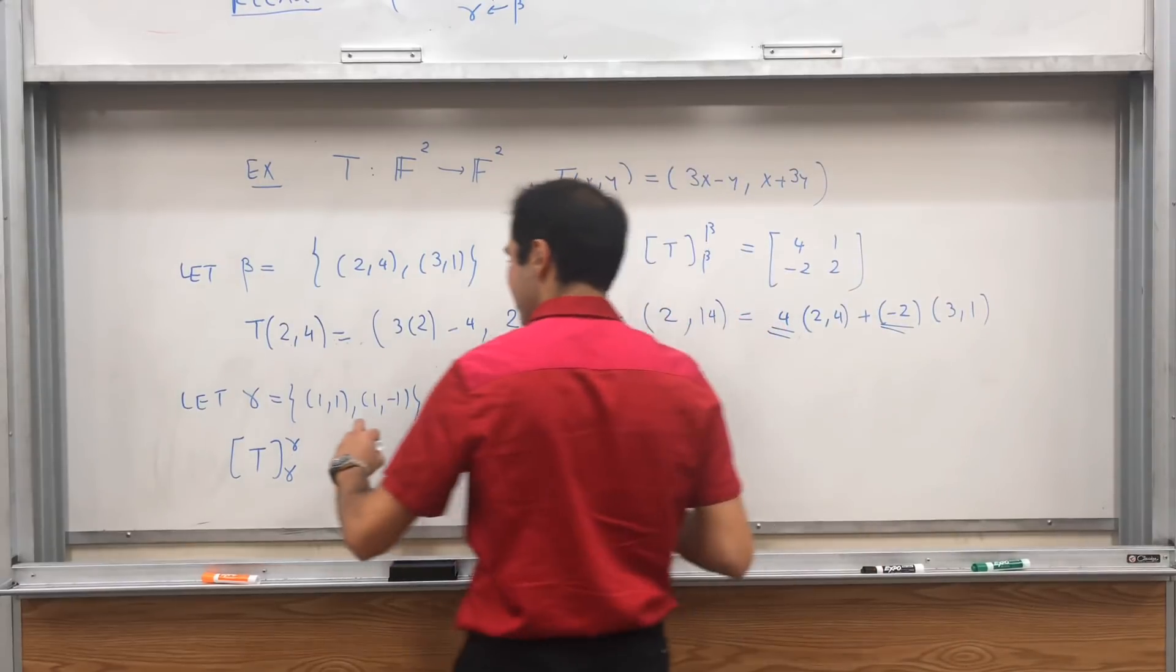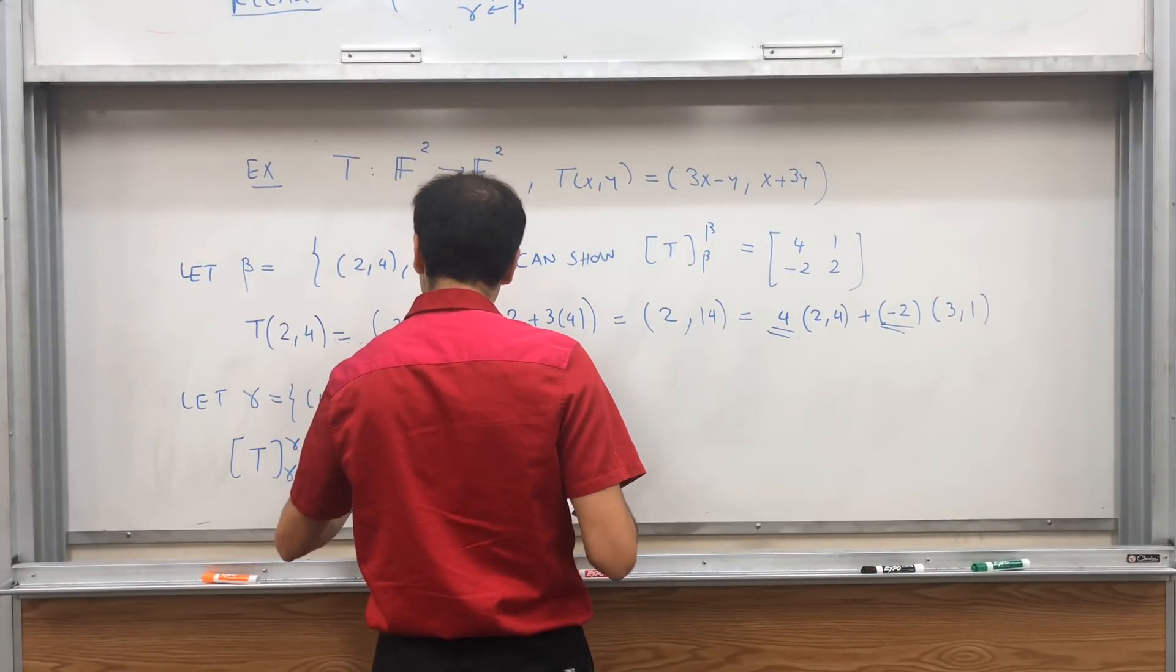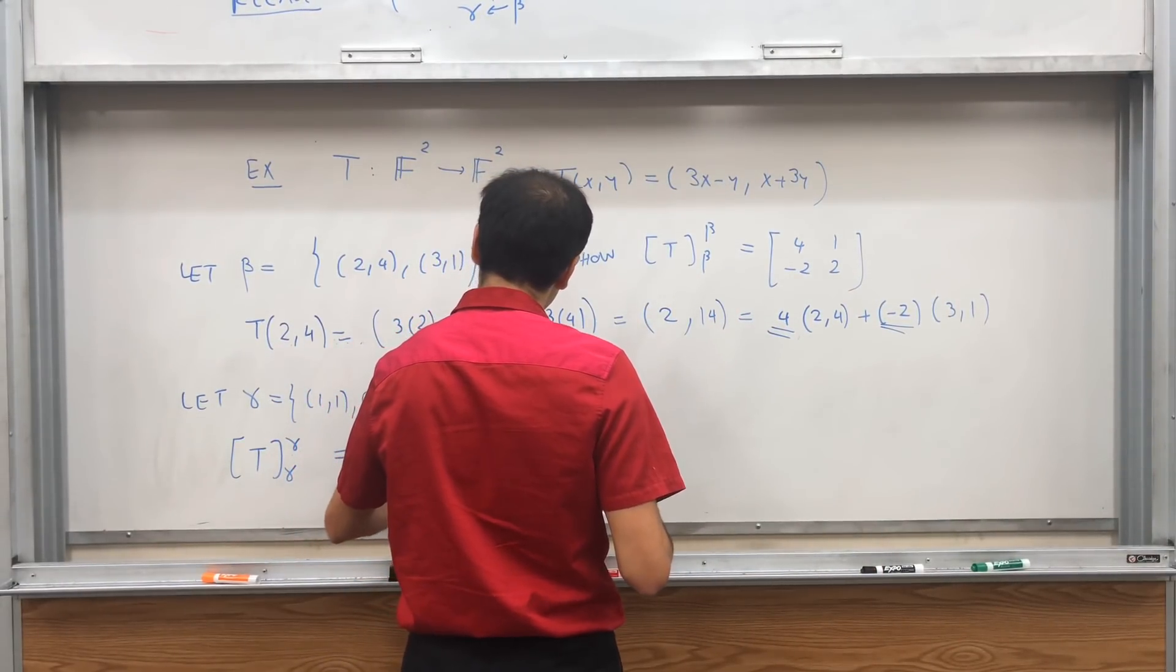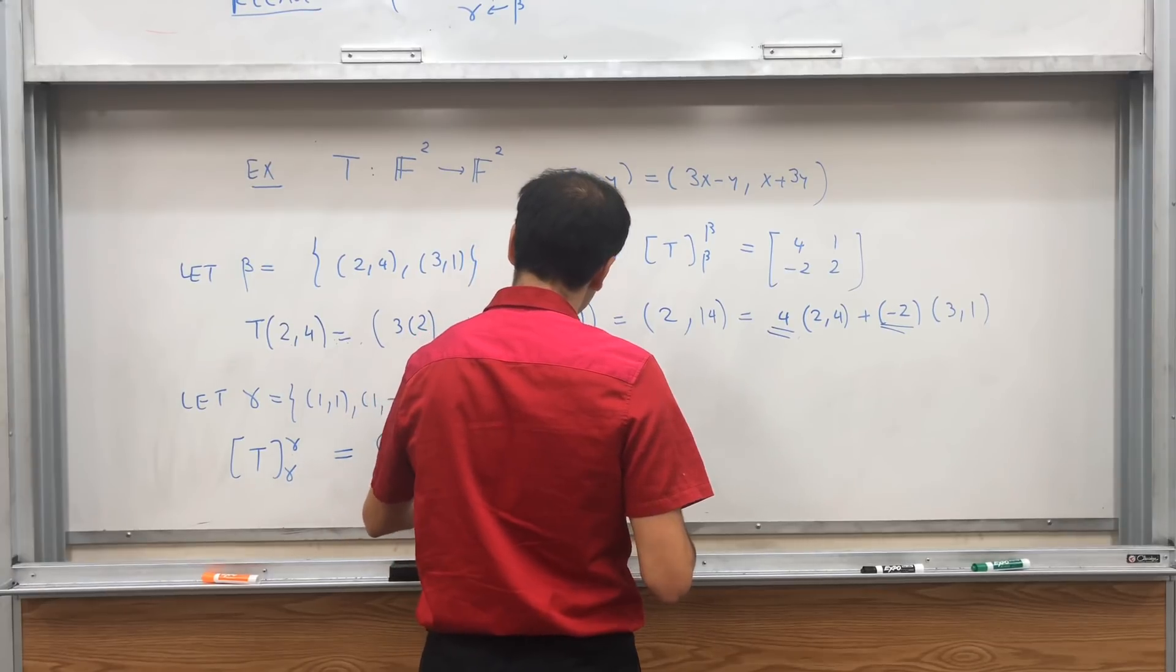But fortunately, using the formula we have now, it's very easy to calculate the new matrix. Just do Q, T beta beta, Q inverse.